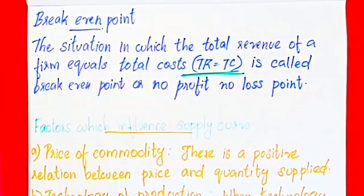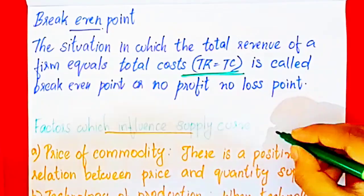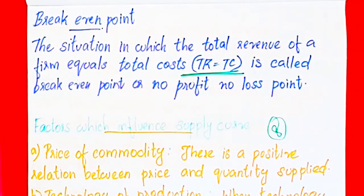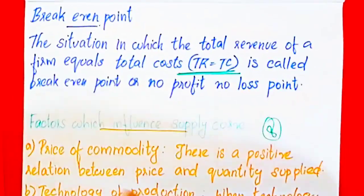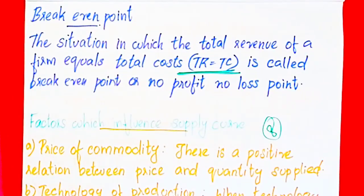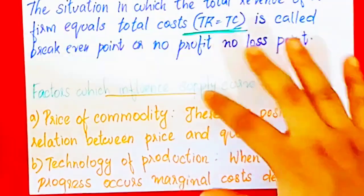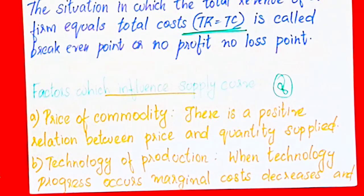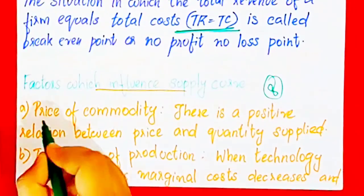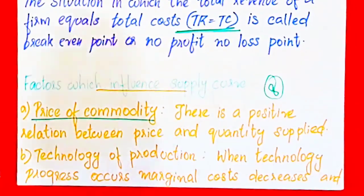The next important topic is the factors that influence the supply curve. The first factor is the price of the commodity. There is a positive relation between price and quantity supplied.